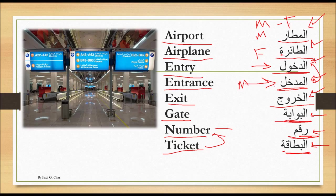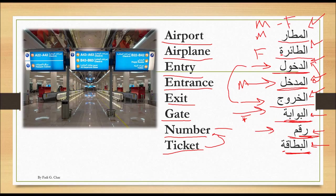Al-madkhal is a male word, so you say 'hatha al-madkhal'. Al-khuruj is exactly like al-dukhol — you don't use hatha or hathihi with it. Al-bawwaba is a female word, so you say 'hathihi al-bawwaba'. For example: 'hathihi al-bawwaba raqam khamsa' — this is gate number five. Raqam is a male word: 'hatha al-raqam khamsa' — this is number five, or 'hatha al-raqam ashara' — this is number ten. Al-bitaqa is a female word: 'hathihi al-bitaqa raqam khamsa' — this is ticket number five.